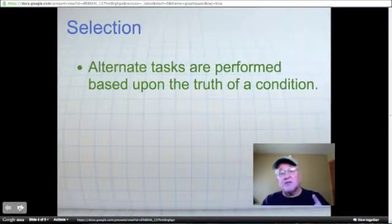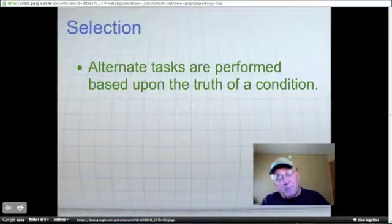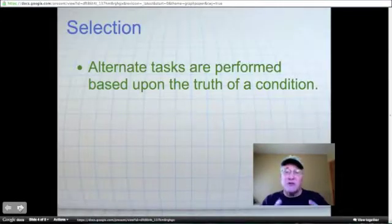Selection. With selection, alternate tasks are performed based upon the truth of a condition. We will shortly be revisiting our gross pay program, and we're going to introduce some selection into that program based upon the hours worked. If the hours worked are greater than 40, we will take a path in our logic to compute overtime pay. If, on the other hand, hours are not greater than 40, we will just calculate gross the same way that we did in the past.